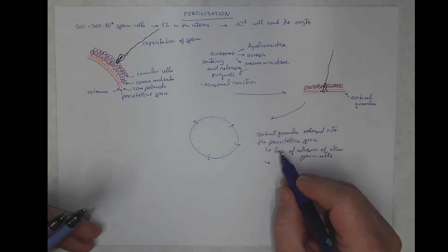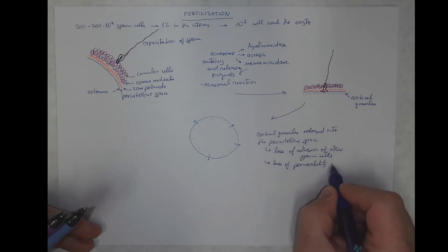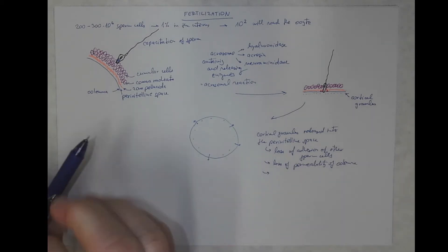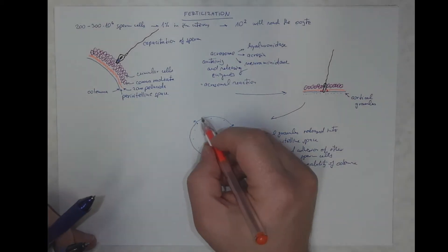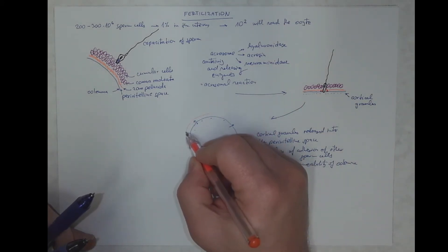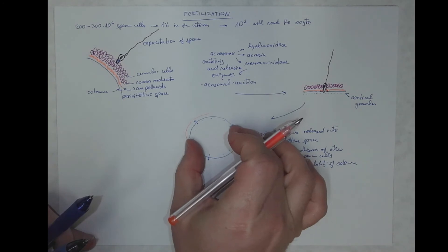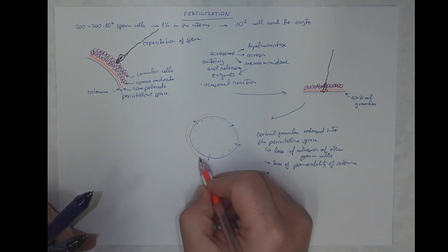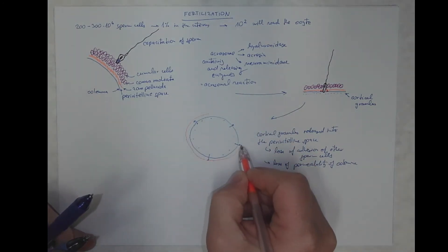Also, the oocyte will lose its permeability. And also the zona pellucida will be more far from the oolemma, because the oolemma will kind of collapse. It will also change its electrical potential.